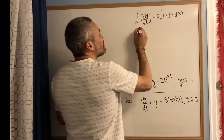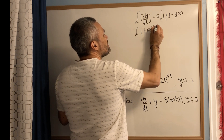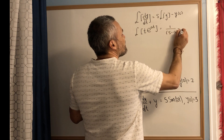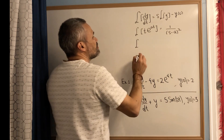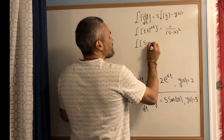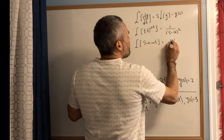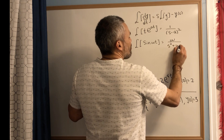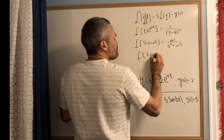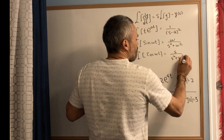We will be using the Laplace transform of t times e to the at, which is 1 over s minus a squared. And the two we showed in a previous video: the Laplace transform of sine of omega t is omega over s squared plus omega squared, and the Laplace transform of cosine of omega t is s over s squared plus omega squared.